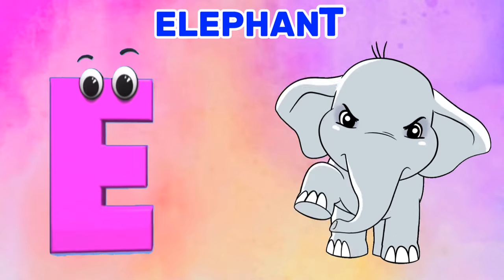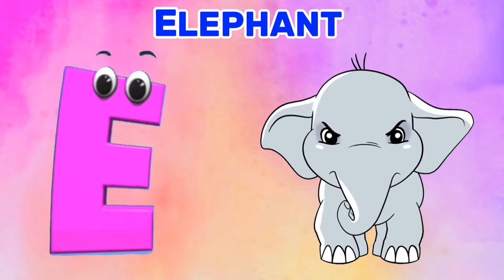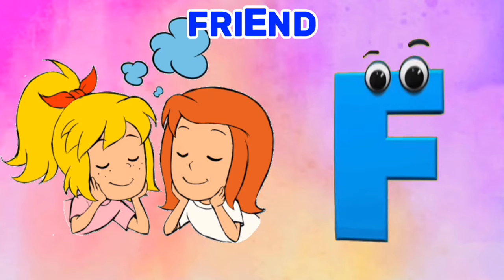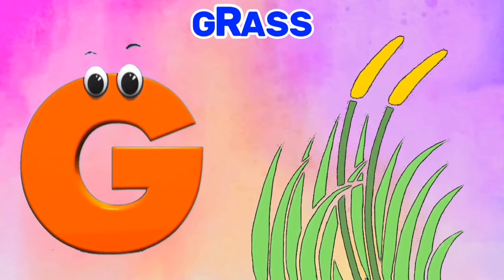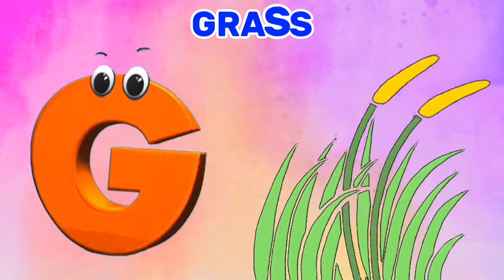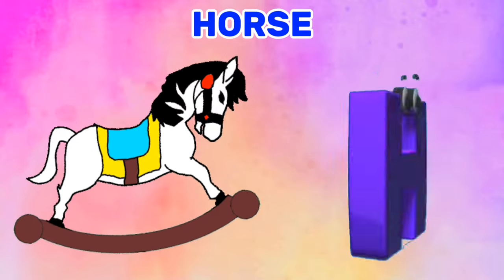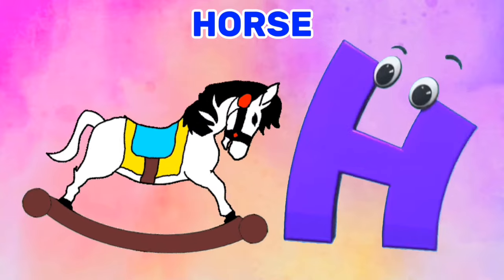E is for Elephant. E, E. Elephant. F is for Friend. F, F. Friend. G is for Grass. G, G. Grass. H is for Horse. H, H. Horse.